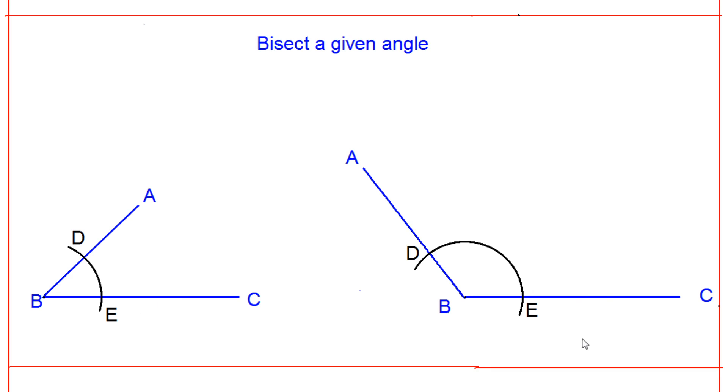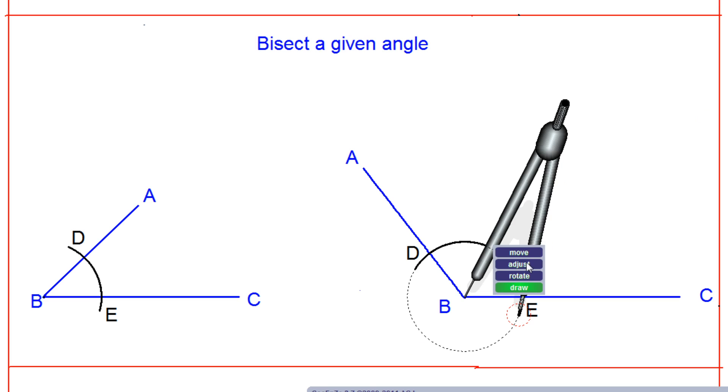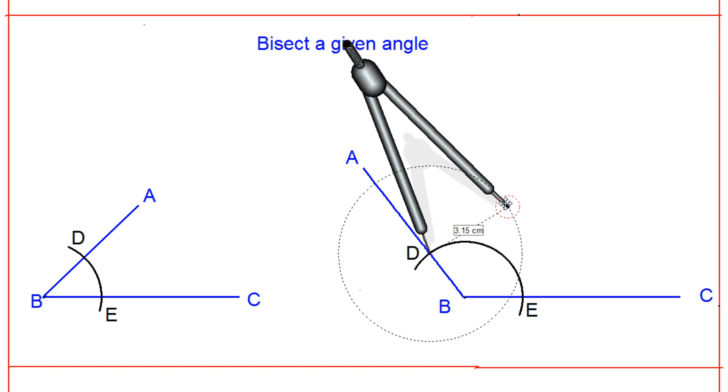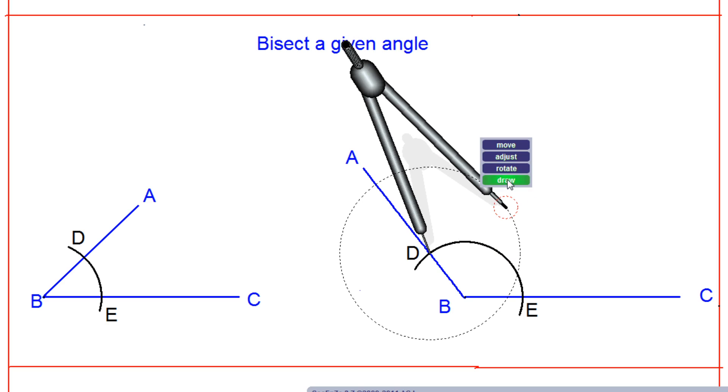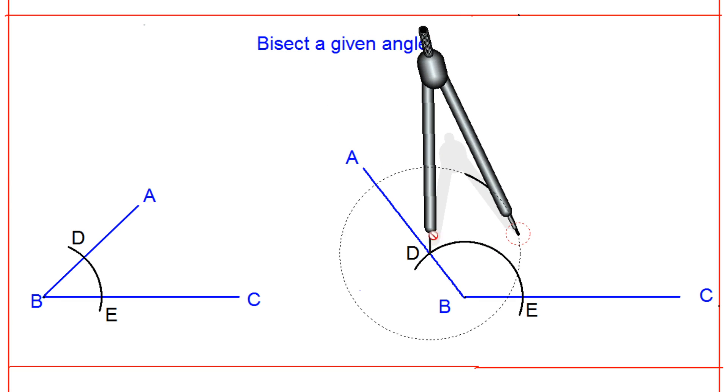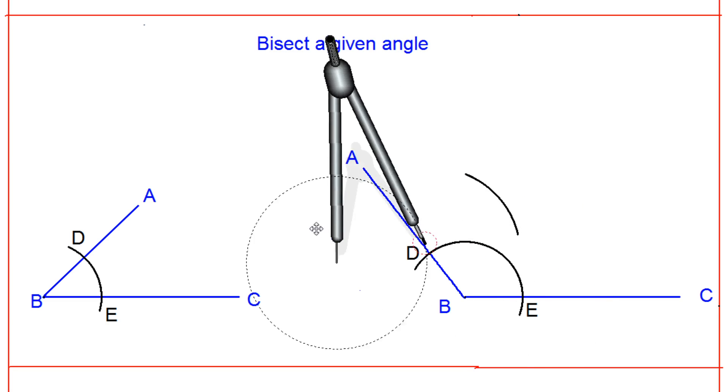Now take the compass once again. Put the compass at point D with the same radius, maybe with the same radius or maybe with a different radius - it doesn't matter. I will take a different radius, turn, no problem. I will take a different radius and put at the same location, making D as the center.